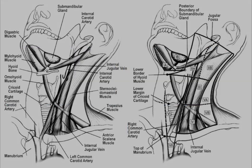Starting with level 1, we have level 1a, the submental region, and level 1b, the submandibular region. Those two subregions are divided by the anterior belly of the digastric muscle.